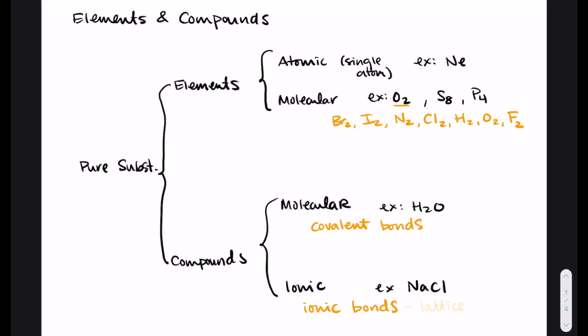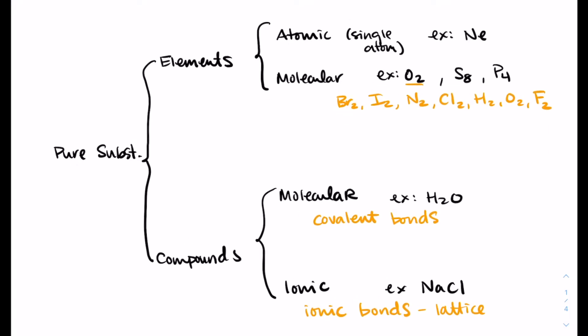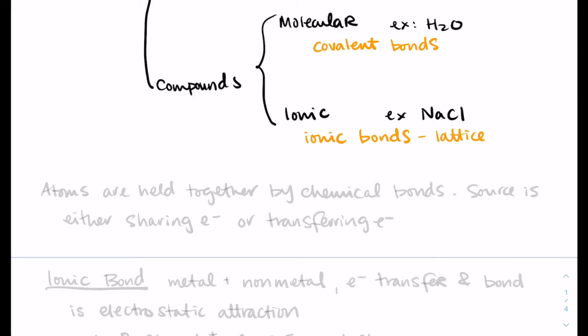In the compound section, you can have compounds that are molecular or ionic. And so this is where we're going to get into different types of bonds. And the only reason that it's important is that it determines the rules we use for naming. So molecular compounds, of which water, H2O, is an example, are held together with covalent bonds. And ionic compounds, of which sodium chloride is an example, are held together with ionic bonds. So all atoms, if they are connected to something else, it is held together by some type of chemical bond. The source of that bond is that they are either sharing electrons or transferring electrons. And that is the difference between covalent and ionic. Covalent is sharing electrons, ionic is transferring electrons.